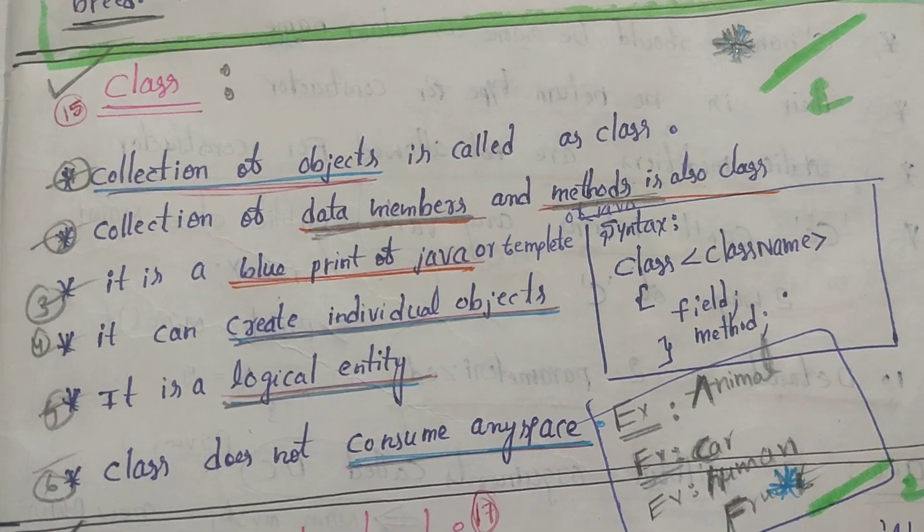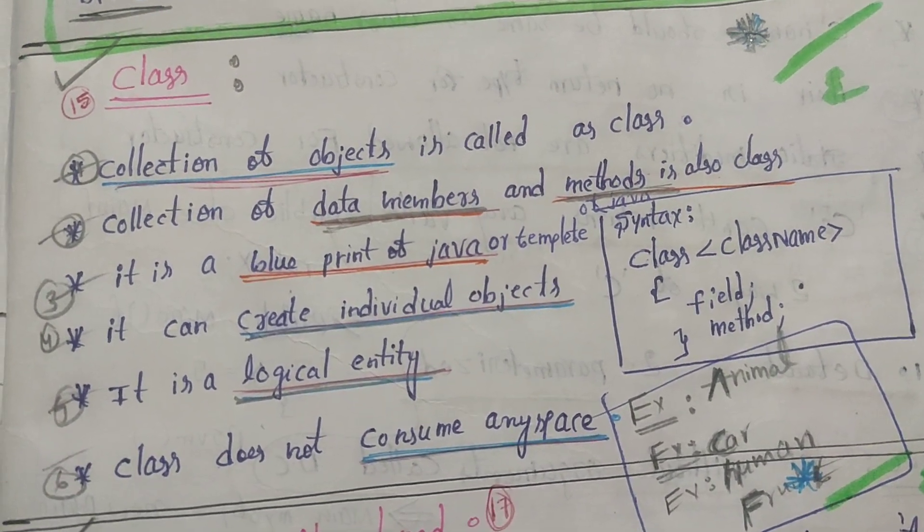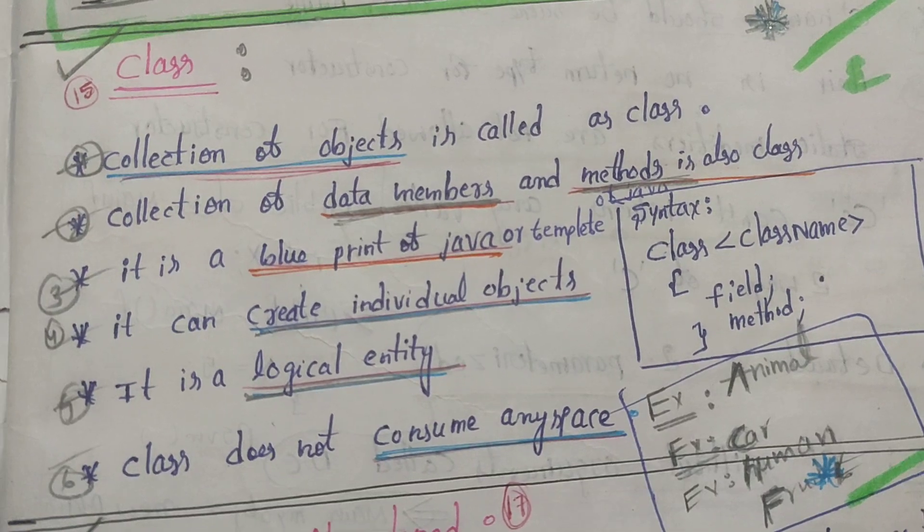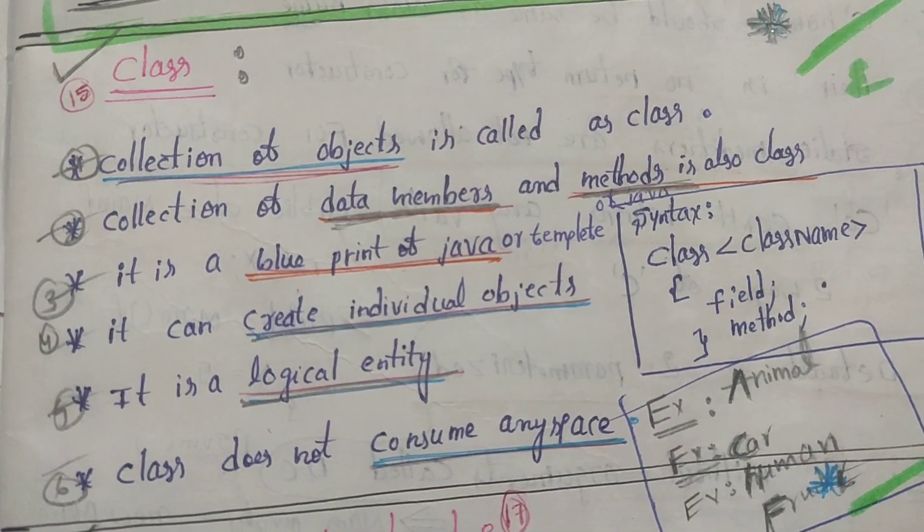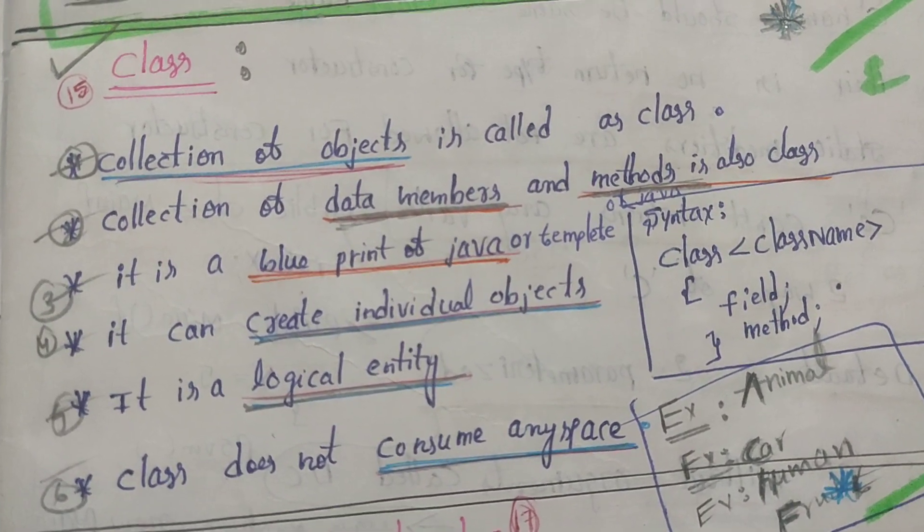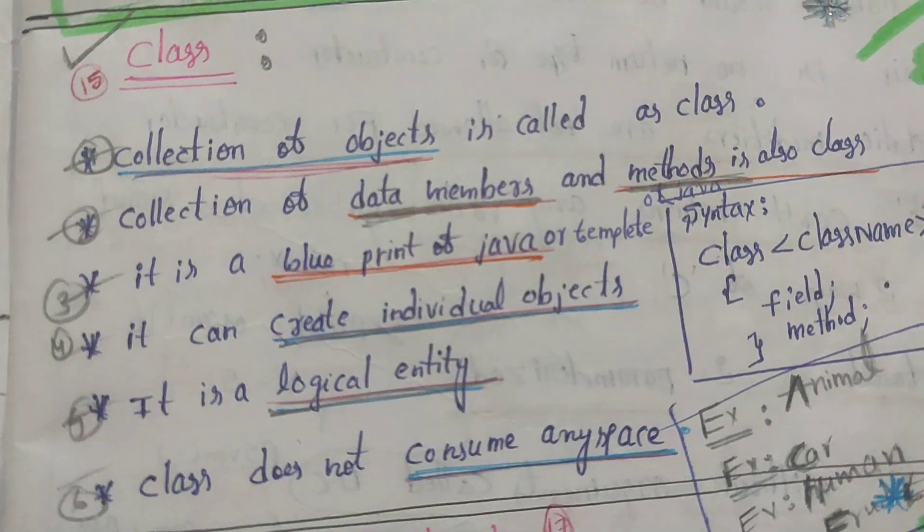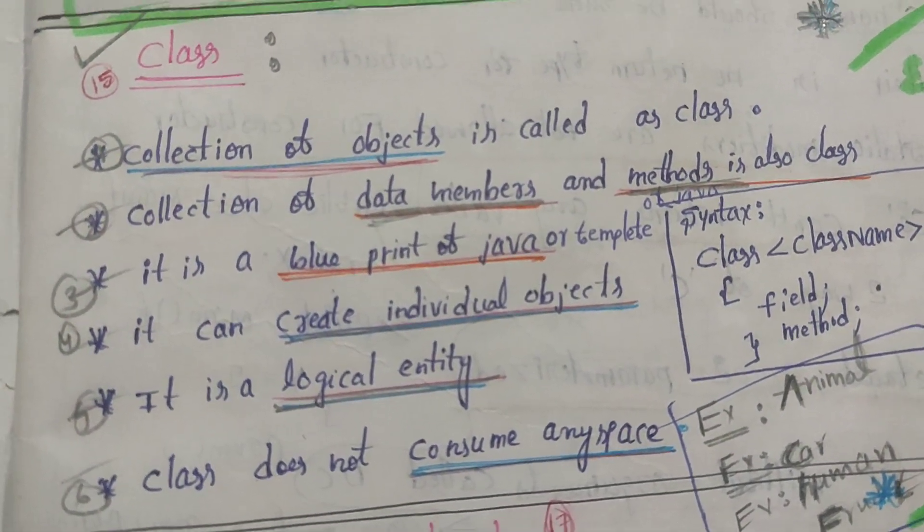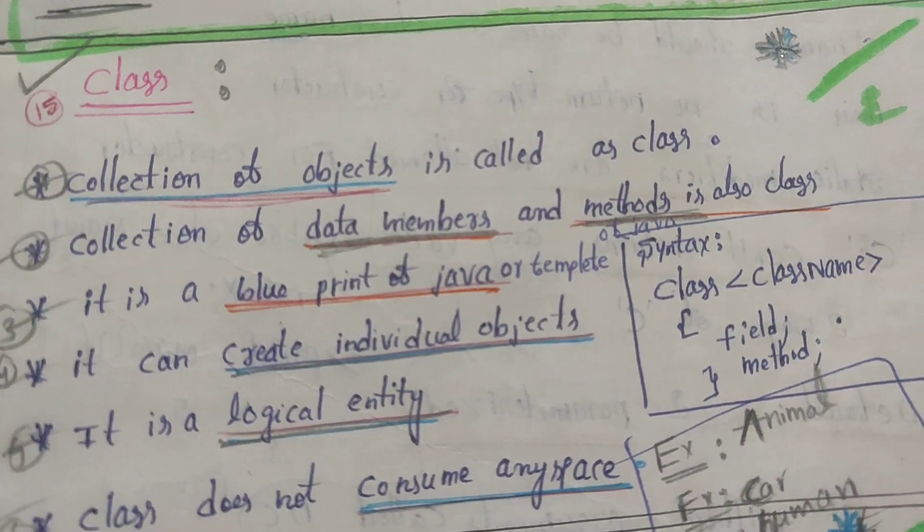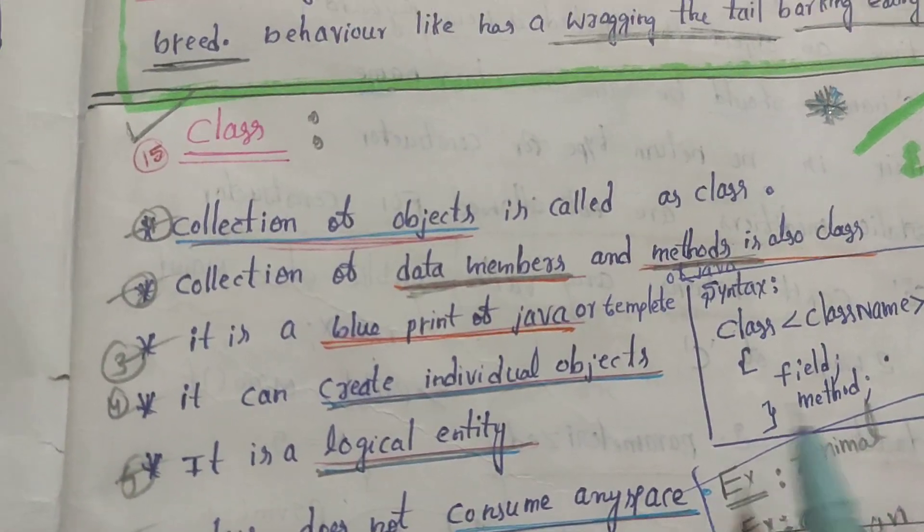In Java OOP concepts, first we'll discuss class. Class is a collection of objects. It is also the collection of data members and methods.